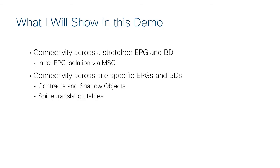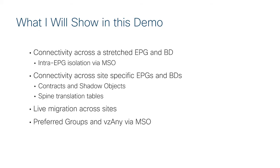I'll also show you what it looks like from the point of view of the spines, because in the multisite environment the spines have an extra job to translate all of the values between sites to make it all make sense. Then I'll show you that it is quite possible to do things like live migration — moving VMs from one site to another without losing connectivity. Finally, I'll end with two additional security features through the point of view of MSO: preferred groups and vzany.